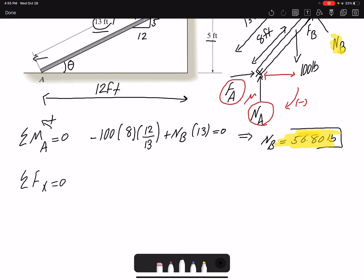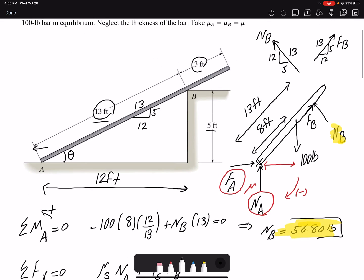Now I'm going to write my other equilibrium equation. Summation of forces in X equals zero. I have F_A, which I can write as μ_s N_A. I have F_B, which I can write as μ_s N_B. I found the value of N_B.